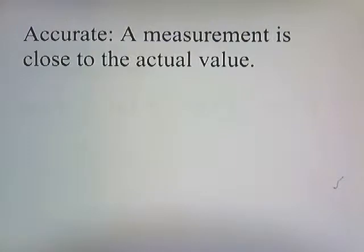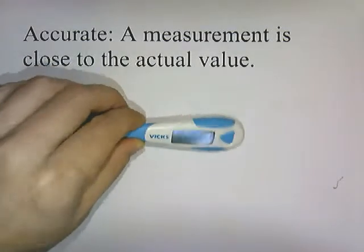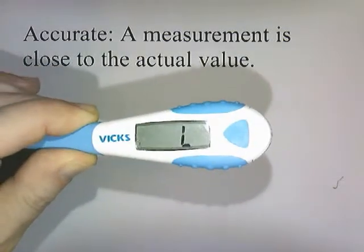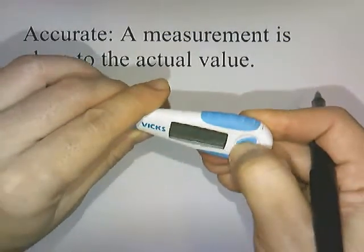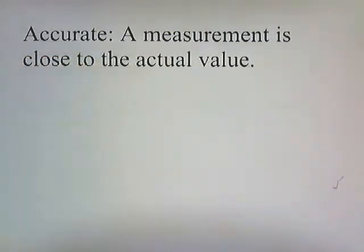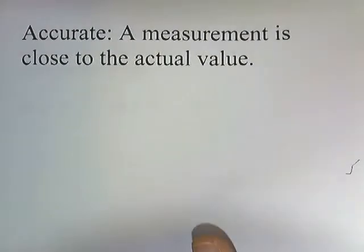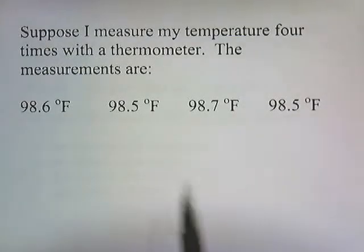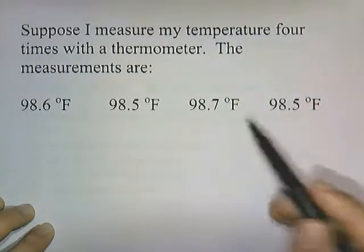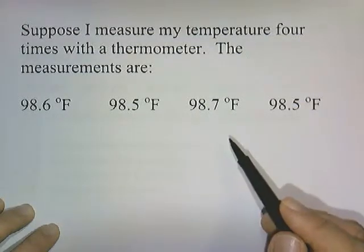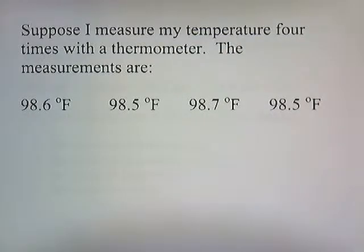As an example of how you'd want something to be accurate, suppose you're going to measure your body temperature. This morning I took my temperature and my body temperature was 98.1 degrees. This is a device you can use to measure your temperature. So I measure my temperature four times. The first time I measure my temperature I get 98.6 degrees Fahrenheit. The second time I get 98.5 degrees Fahrenheit. The third time I get 98.7 degrees Fahrenheit. And the fourth time I get 98.5 degrees Fahrenheit.